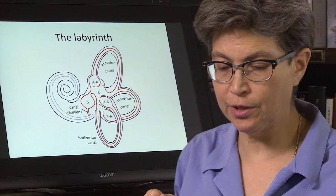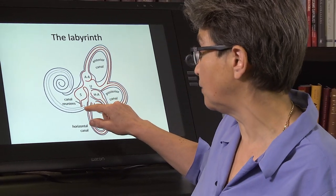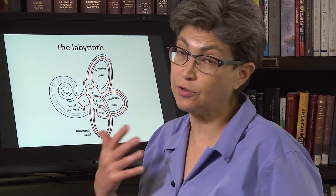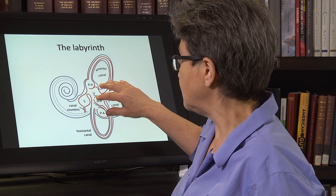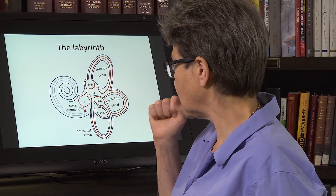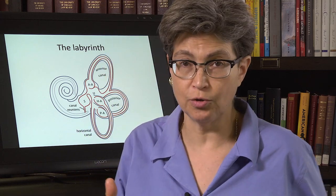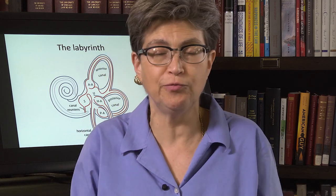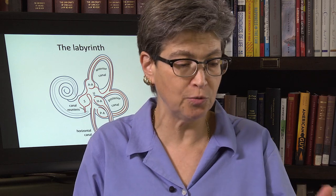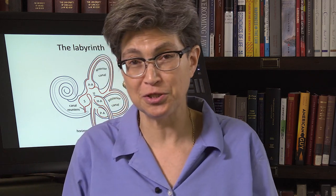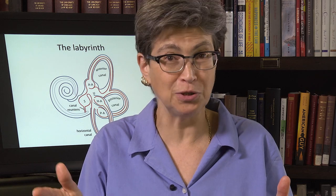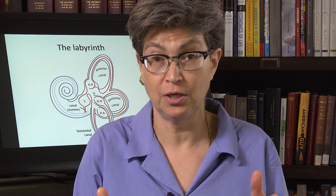Despite sharing the endolymph and sharing this common housing, there are some big differences between the cochlea and the vestibular apparatus. One is that the frequencies we deal with are on really different scales. In hearing we're dealing with up to 20 kilohertz of sound, whereas in the vestibular situation, most of the stimulation is below 10 hertz — probably all of it is below 25 hertz.